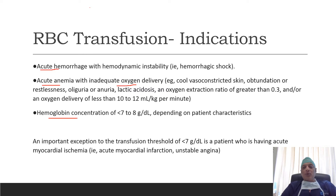It is important to understand that hemoglobin concentration of less than 7 to 8 gram percent does not apply to category 1 and category 2. The important exception to the transfusion threshold of less than 7 gram percent is a patient who has the presence of acute myocardial ischemia.